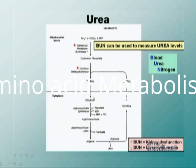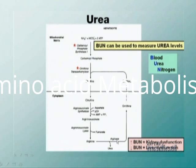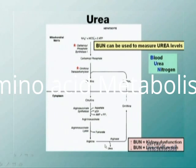Citrulline moves into the cytoplasm and undergoes reactions via argininosuccinate synthetase, argininosuccinate lyase, and finally arginase. Arginase is the enzyme responsible for cleaving the urea molecule from arginine — it's essentially the last enzyme of the urea cycle. When arginase clips urea off arginine, what's left is ornithine, which restarts the cycle by going back into the mitochondria to combine with carbamoyl phosphate.